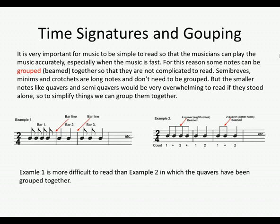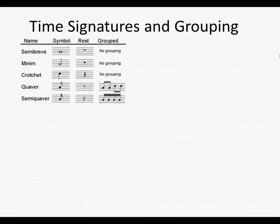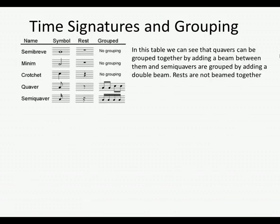In Example 1, the quavers have not been grouped together and there are quite a few notes to read, but Example 2 has grouped the quavers together and it really looks a lot simpler. Any musician would be far happier to read Example 2 than Example 1. Quavers can be grouped together by adding a beam between them, and semi-quavers are grouped by adding a double beam. Remember, rests are never beamed together.